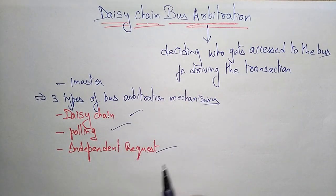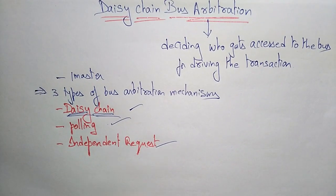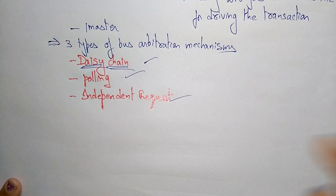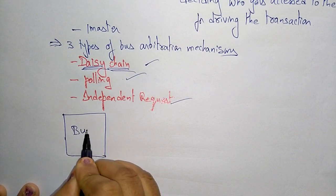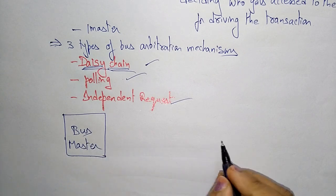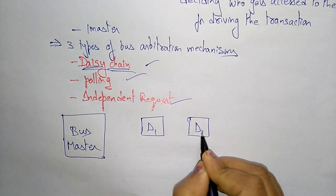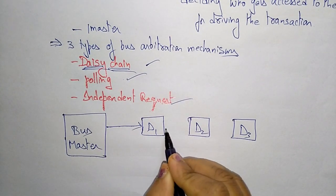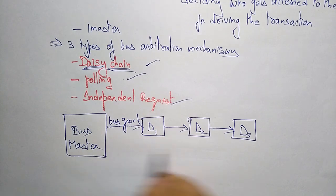In daisy chain bus arbitration, each uses special control lines for arbitration. Looking at the diagram, we have the bus master on one side, and connected to it are device one, device two, and device three. These devices are all connected one end to another. The bus grant is given by the bus master.